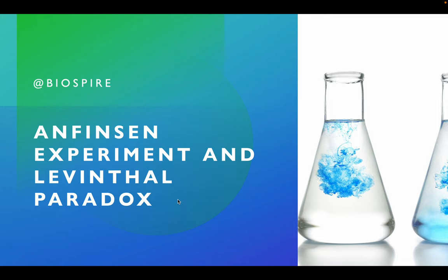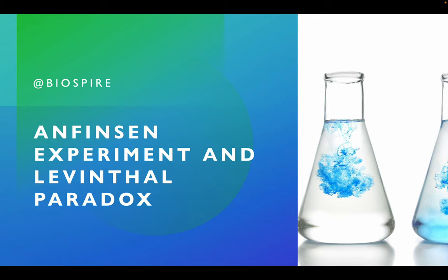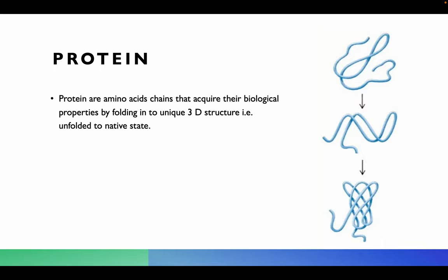In this video we are going to talk about two important experiments about protein folding: the Anfinsen experiment and the Levinthal paradox. We'll talk about the theories they had about protein folding and how they proved them. In the last video we already talked about proteins, which are chains of amino acids that acquire their function by folding into a proper 3D structure, going from unfolded to native structure through primary, secondary, tertiary, and quaternary structure.